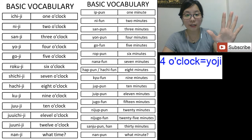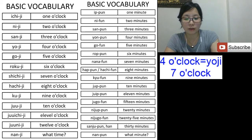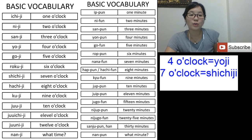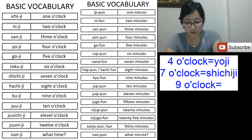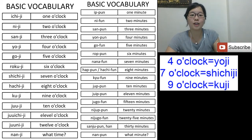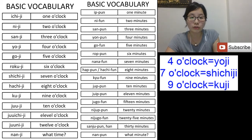Go-ji, roku-ji, then seven o'clock is 'shichi-ji' — we cannot say 'nana-ji', it is 'shichi-ji'. Hachi-ji, then ku-ji — we cannot say 'kyuu-ji', it's 'ku-ji'. After ten, juu-ji, you just add one, two, three — so 'juu-ichi-ji' means eleven o'clock, juu is ten and ichi is one. 'Juu-ni-ji' means twelve o'clock.